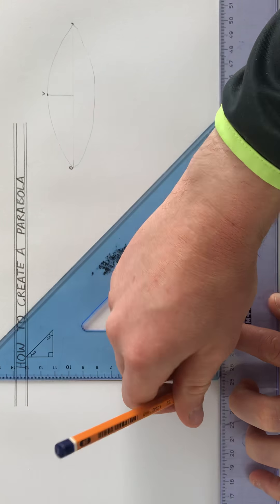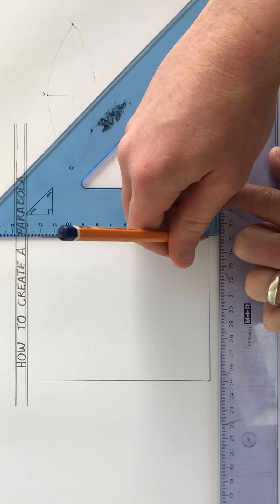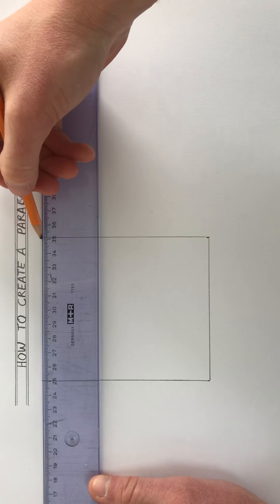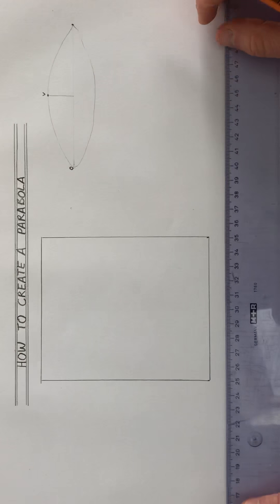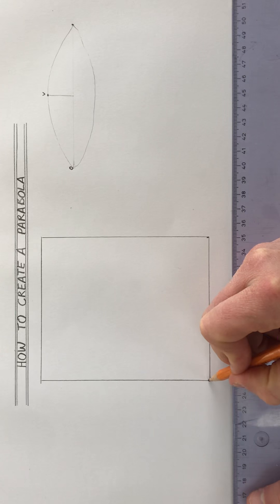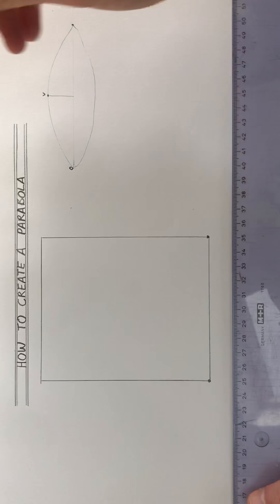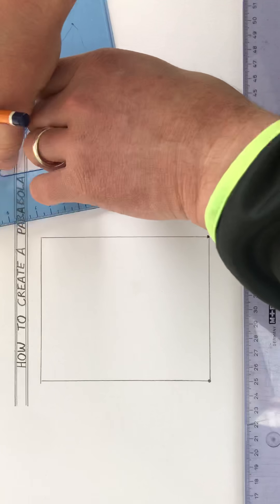So we will always start off with those dimensions, you will be given those in the question. So if the ball is on the ground here and it's going to land here, where's it going to be at its highest? It's going to be halfway.